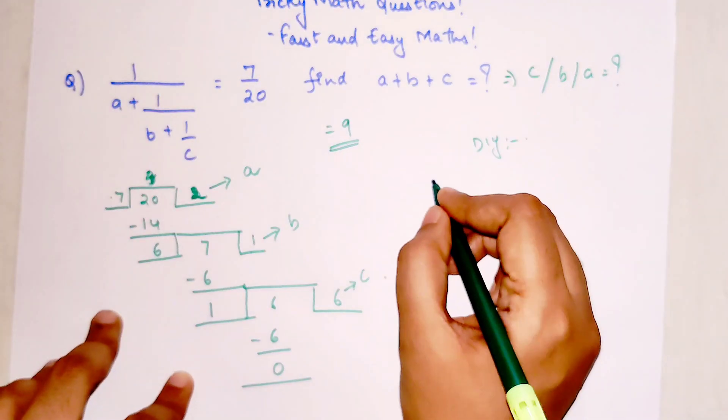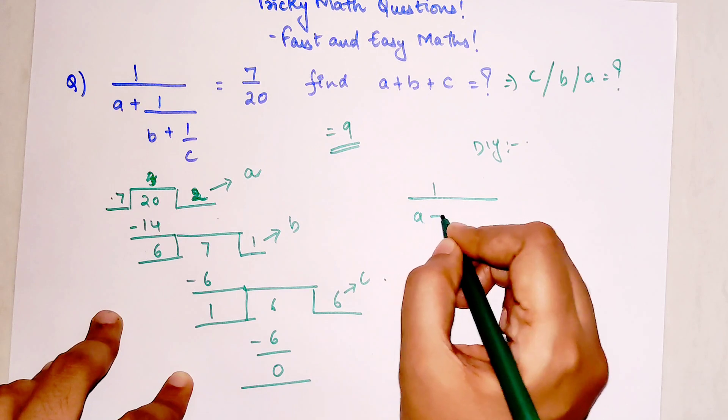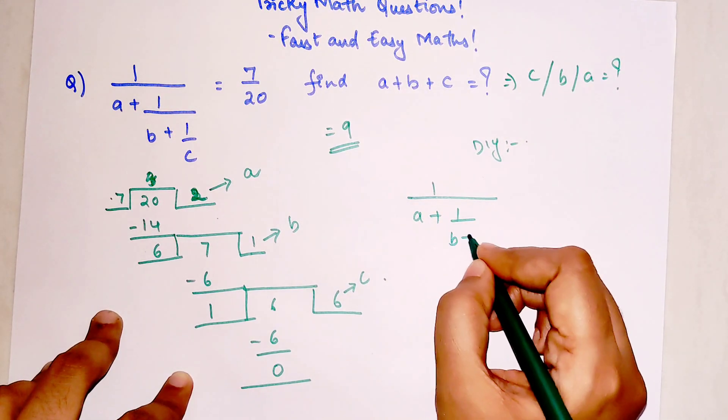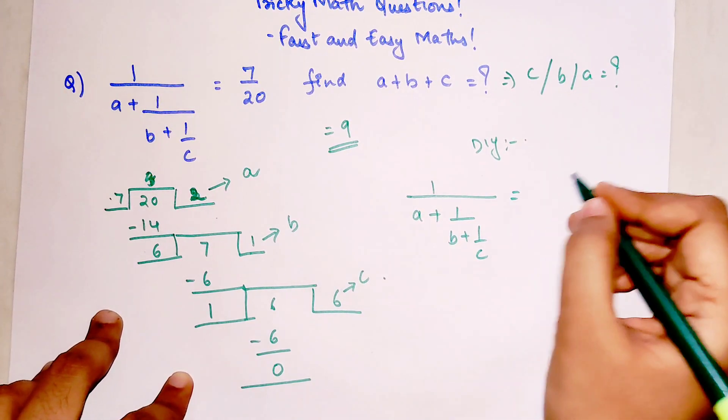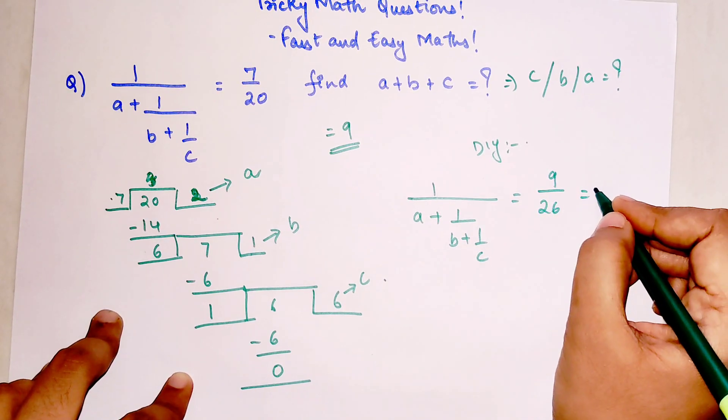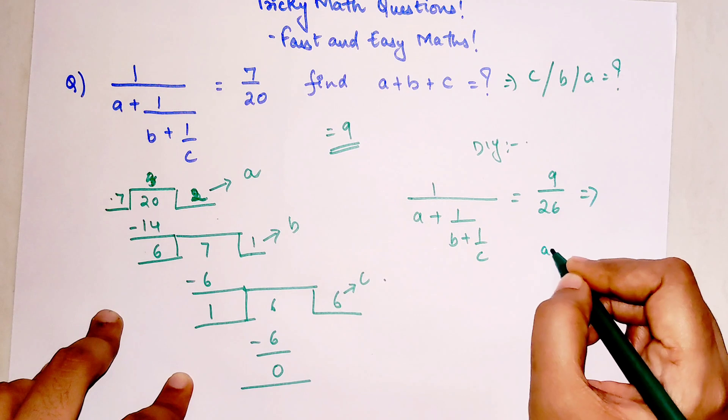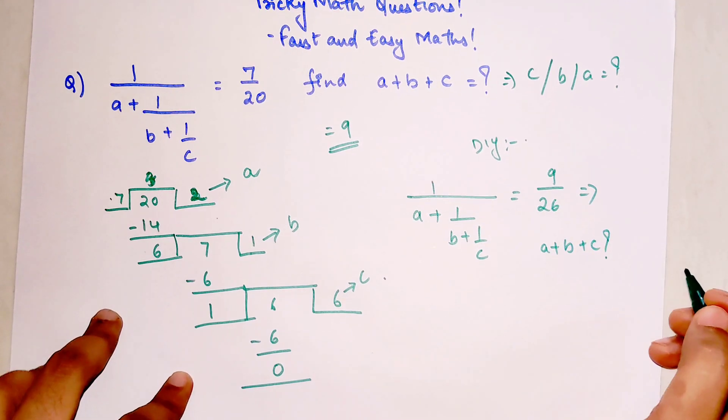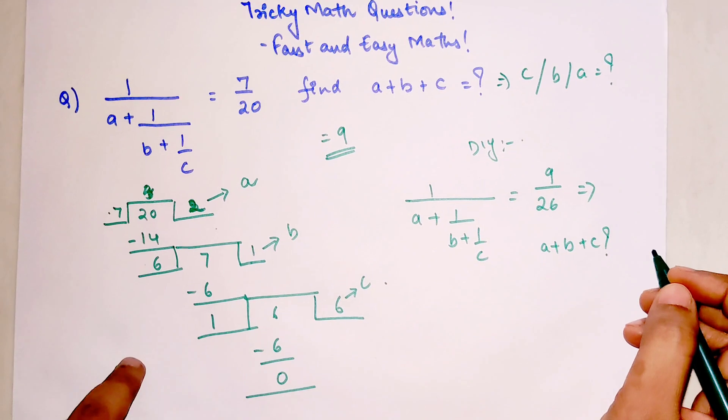So now for your next question, the question is similar type. If this value was equal to 9 upon 26, then you are going to find the value of A plus B plus C. Do let me know your answers in the comment section.